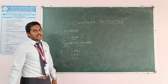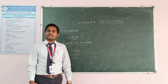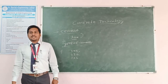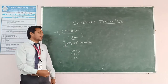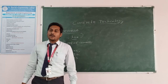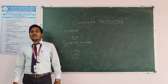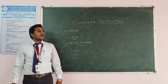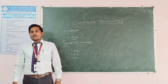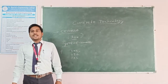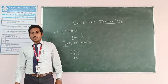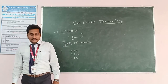First of all, Ordinary Portland Cement is used in the normal construction process, like commercial buildings and normal buildings. The second one is Rapid Hardening Cement. Wherever we want quick construction and a strict setting time, we are using Rapid Hardening Cement. Mainly in cold areas, we are using Rapid Hardening Cement.